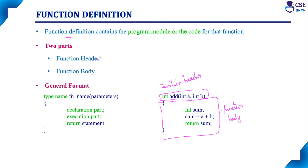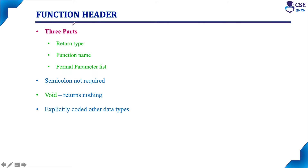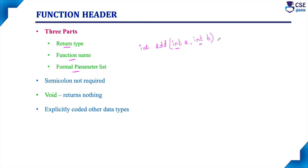Function definition consists of two parts: function header and function body. The first line is the function header, and the remaining part within the curly braces is the function body. The function header itself has three parts: return type, function name, and formal parameter list. The return type is the data type, for example int. The function name here is 'addition', and the formal parameter list consists of variables a and b. These parameters must be specified along with their data types. Also, no semicolon is required after the function header.